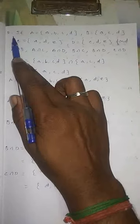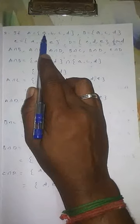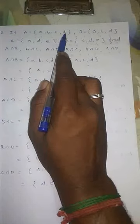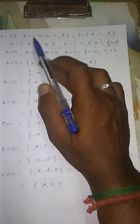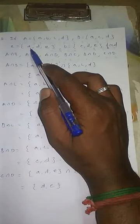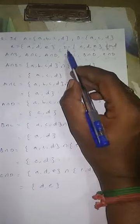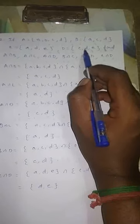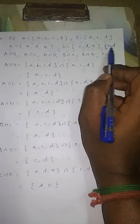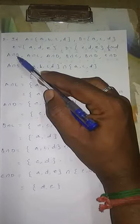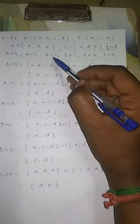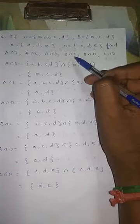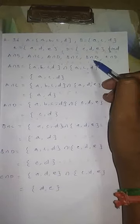Okay, next sum — second sum. If A equals {A, B, C, D}, B equals {A, C, D}, C equals {A, D, E}, and D equals {C, D, E}. Find A intersection B, A intersection C, A intersection D, B intersection C, B intersection D, and C intersection D.